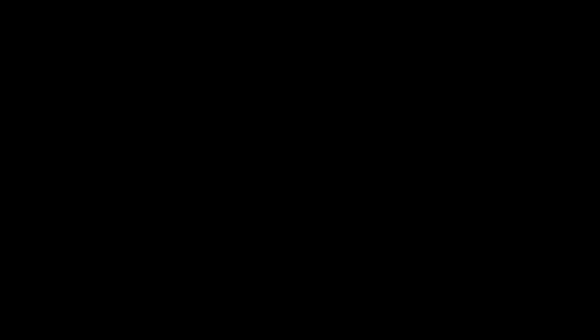Now we're going to take a quick look at a graph that shows how quickly sequencing is improving. Back in 2001, that's just a little over a decade ago, it cost $100 million to sequence one genome. That's just one genome.